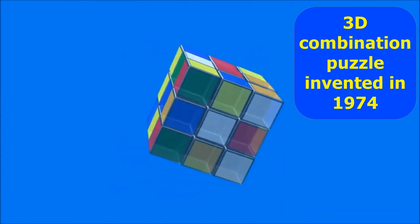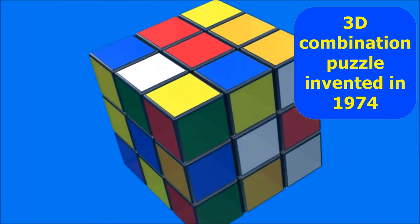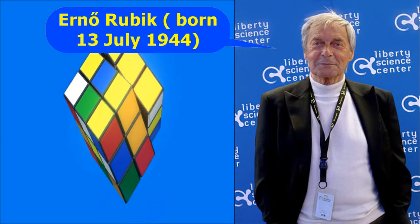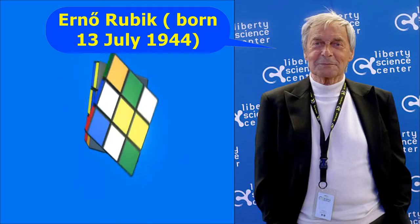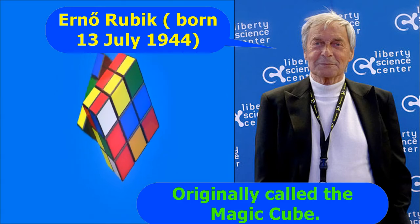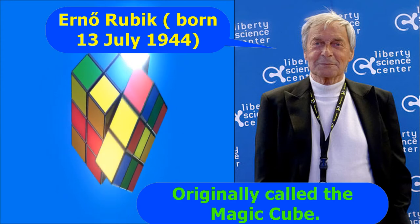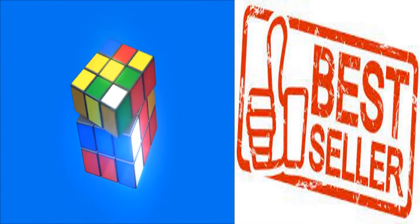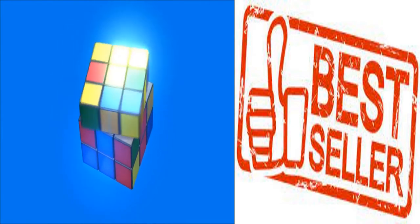Rubik's Cube is a 3D combination puzzle invented in 1974 by Hungarian sculptor and professor of architecture Ernő Rubik and was originally called the Magic Cube. Rubik's Cube is listed as one of the 100 most influential inventions during the 20th century. Additionally, it is widely considered to be the world's best-selling toy.